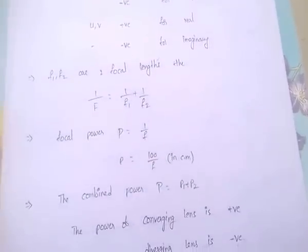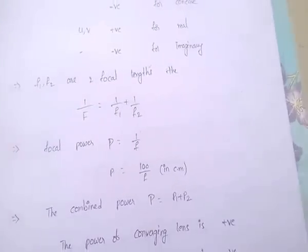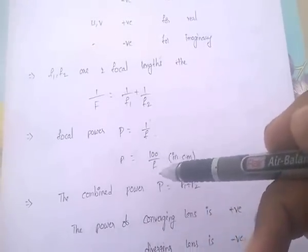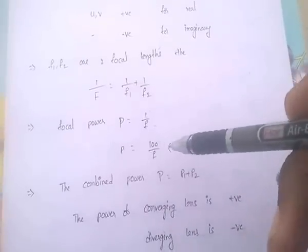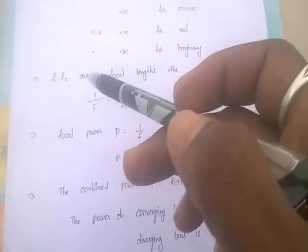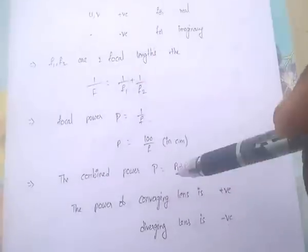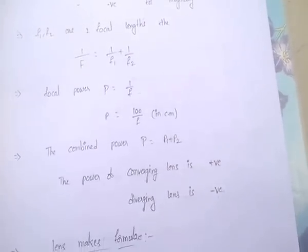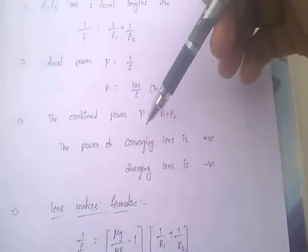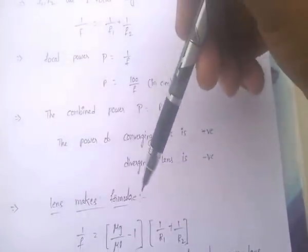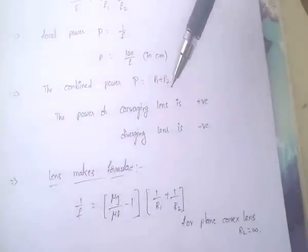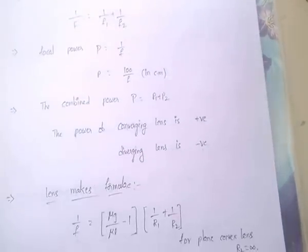Focal power is denoted by P, and P equal to 1 by F. In case of centimeters, P equal to 100 by F. The combined power for two focal lengths F1 and F2 is P equal to P1 plus P2. The power of converging lens is positive and the power of diverging lens is negative.